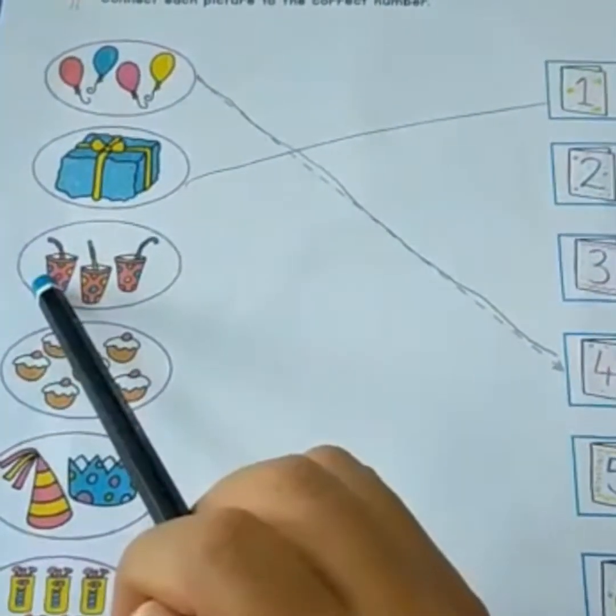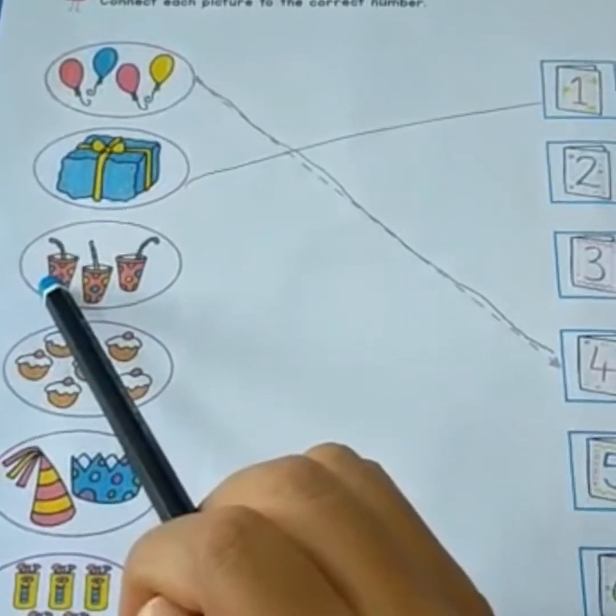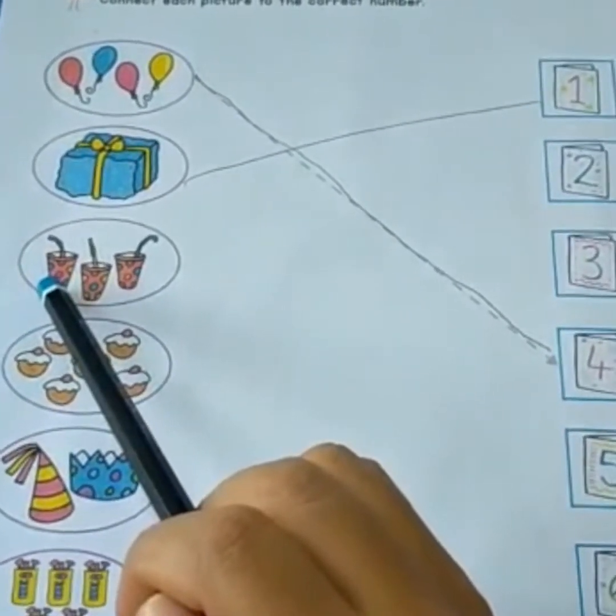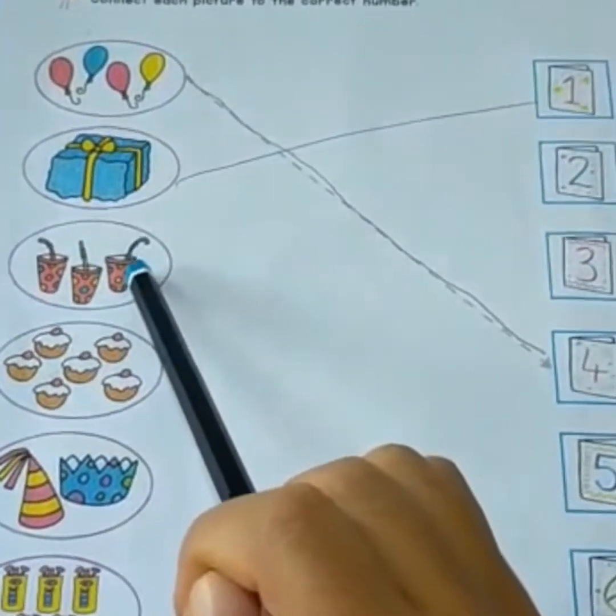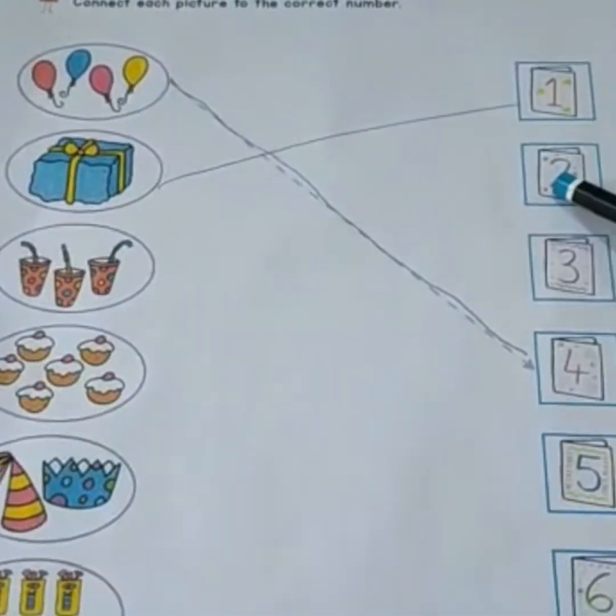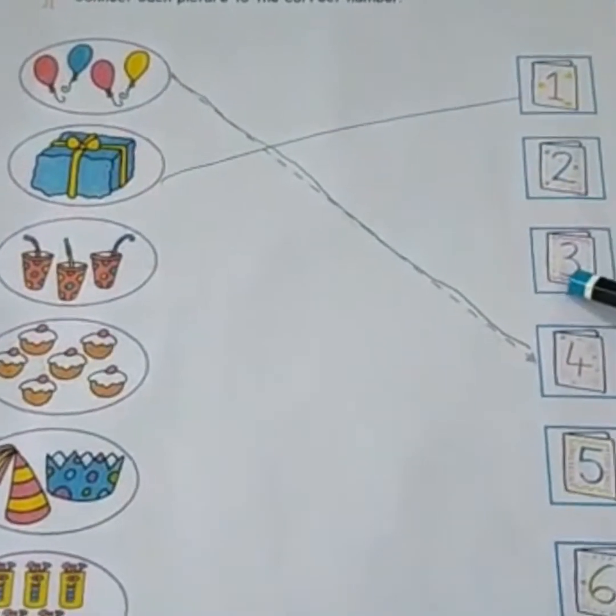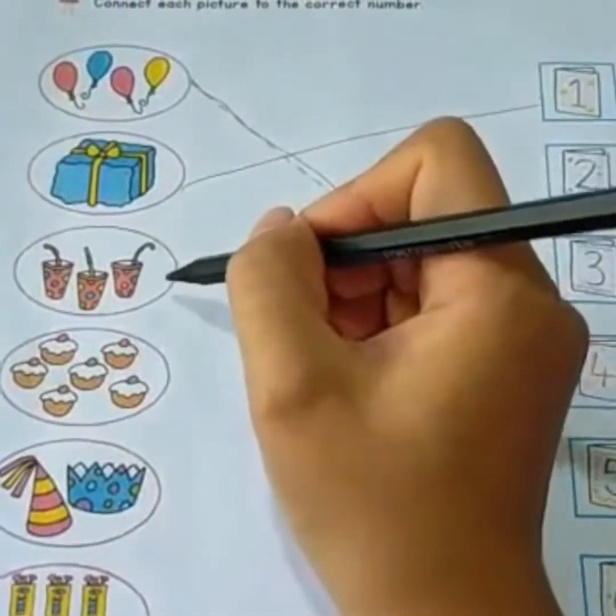Now, picture number 3. Say drinks. Let's count how many drinks. 1, 2, 3. Is this number 3? No, no, no. Is this number 3? Yes, yes, yes.